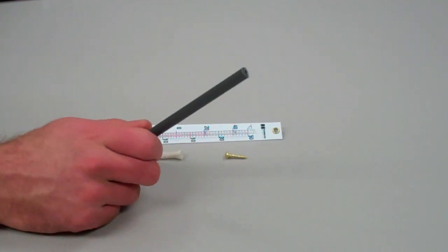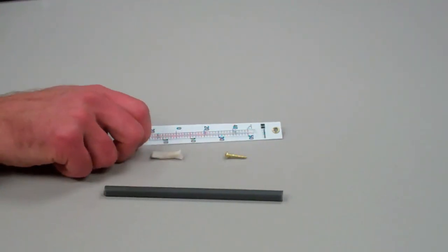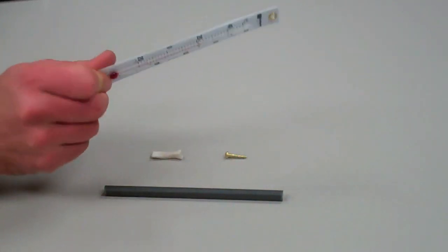The instrument consists of a plastic handle to which it attaches two identical thermometers that are able to spin around the handle.